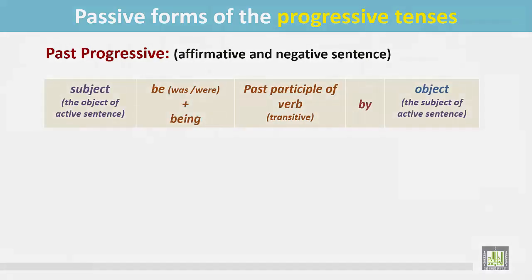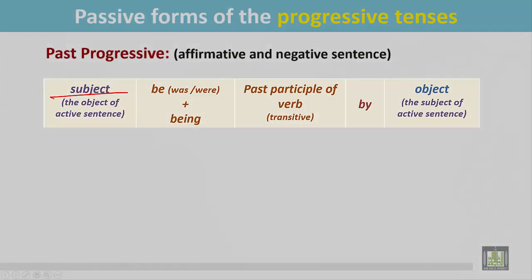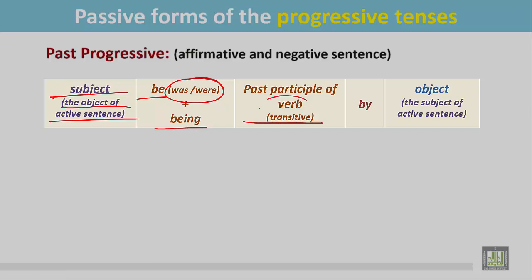See the structure. The object of the active sentence becomes the subject. Then the be verb — was or were — according to the number and person of the subject. Then 'being', followed by the past participle form of the transitive verb, then the preposition 'by', and the object. The subject of the active sentence becomes the object in the passive form.